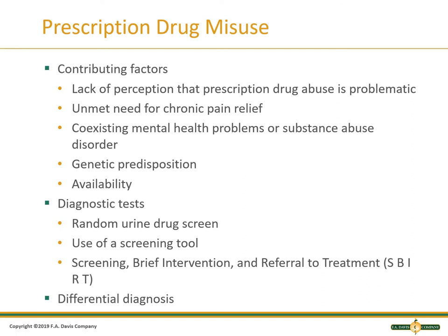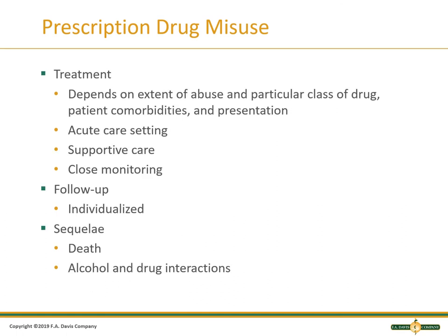Random urine drug screens are often required by primary care physicians to make sure, number one, they're taking their medication, and number two, they're not taking other medications not being prescribed. Use those screening tools — screening, brief intervention, and referral to treatment. Utilize those resources that are in place. Make sure there's no differential diagnosis — are they having significant pain because they have chronic abdominal pain not being worked up? They might appear to be drug-seeking, but it's because they haven't had a GI issue worked up due to too many things going on at home, and they don't want to know if there's a problem.